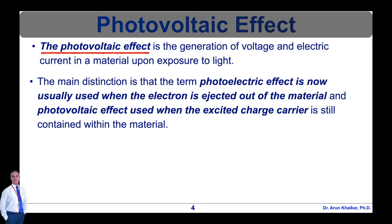In either case, an electric potential or voltage is produced by the separation of charges, and the light has to have sufficient energy to overcome the potential barrier for excitation. The physical essence of the difference is usually that photoelectric emission separates the charges by ballistic conduction and photovoltaic emission separates them by diffusion.